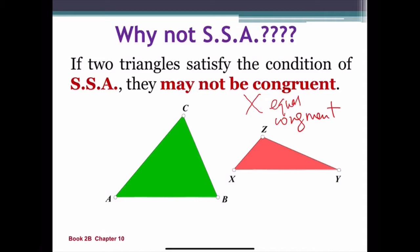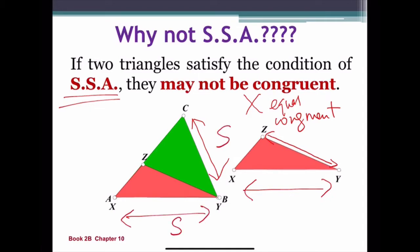but they are in the condition of SSA. YZ will be equal to BC, and XY equal to AB. So this is S, S. And finally, angle A and angle X, they are also equal.